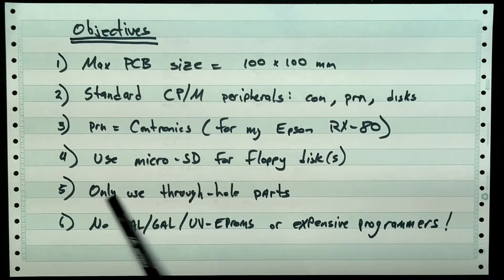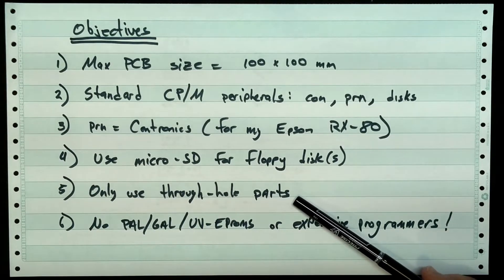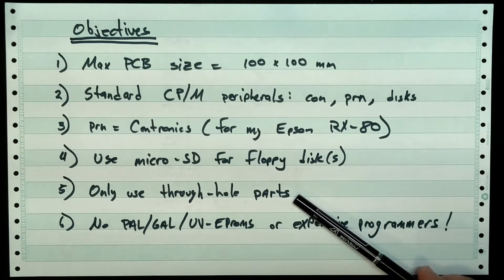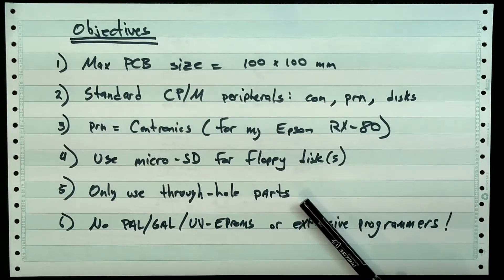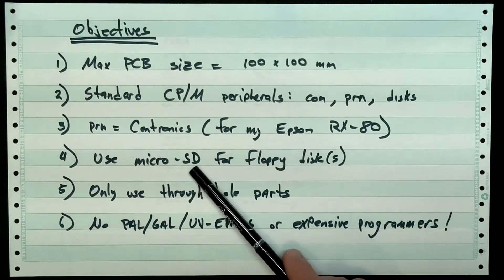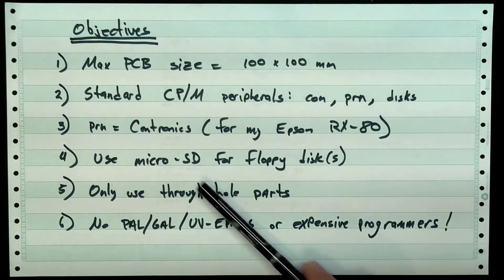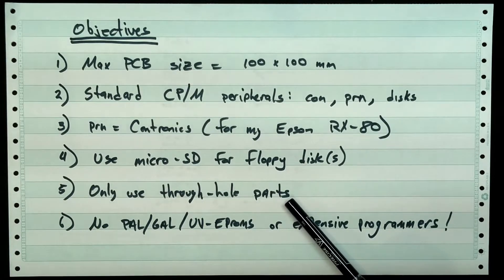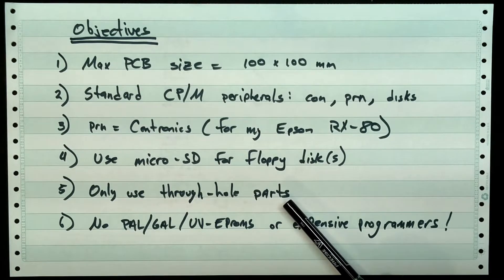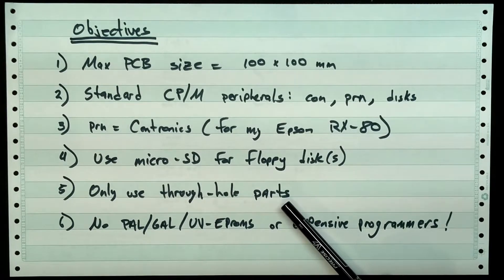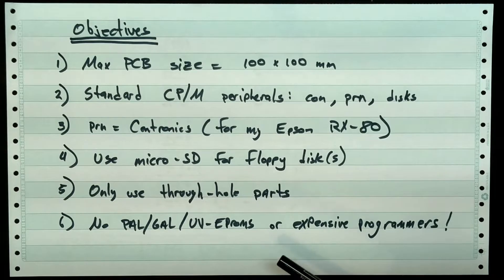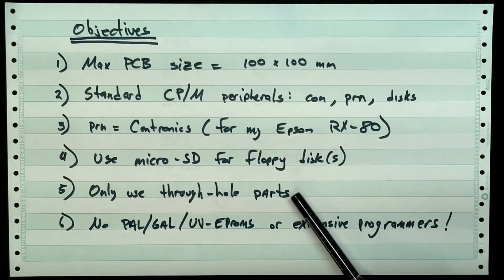I want to only use through-hole parts. This should make it attainable. Anybody that can operate a soldering iron and solder a resistor or a dip chip into a PC board should be able to build this project. Now, in order to solder in a micro SD socket, the only ones I could find are surface mount sockets. So I give you two options. There's a header on the board where you can just go over to SparkFun and buy a $5 adapter board. Or I also have on the board a space where you can solder in the micro SD socket if you want and keep all the parts all on one board.